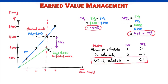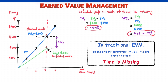We are behind schedule by $100. Schedule variance is in dollars. We have completed roughly 67 percent of the planned job, so SPI represents the percentage of completed activities. Time is missing — this is definitely a limitation of the traditional EVM approach. We have additional challenges with the traditional approach to tracking schedule performance.